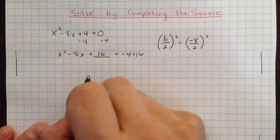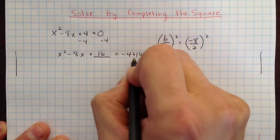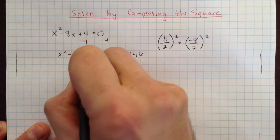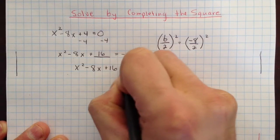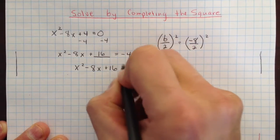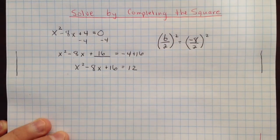Then from there, we'll simplify both sides a little bit. We'll go ahead and simplify this side here to get x squared minus 8x plus 16, and then equals over here, we get 12. Negative 4 plus 16 is 12.